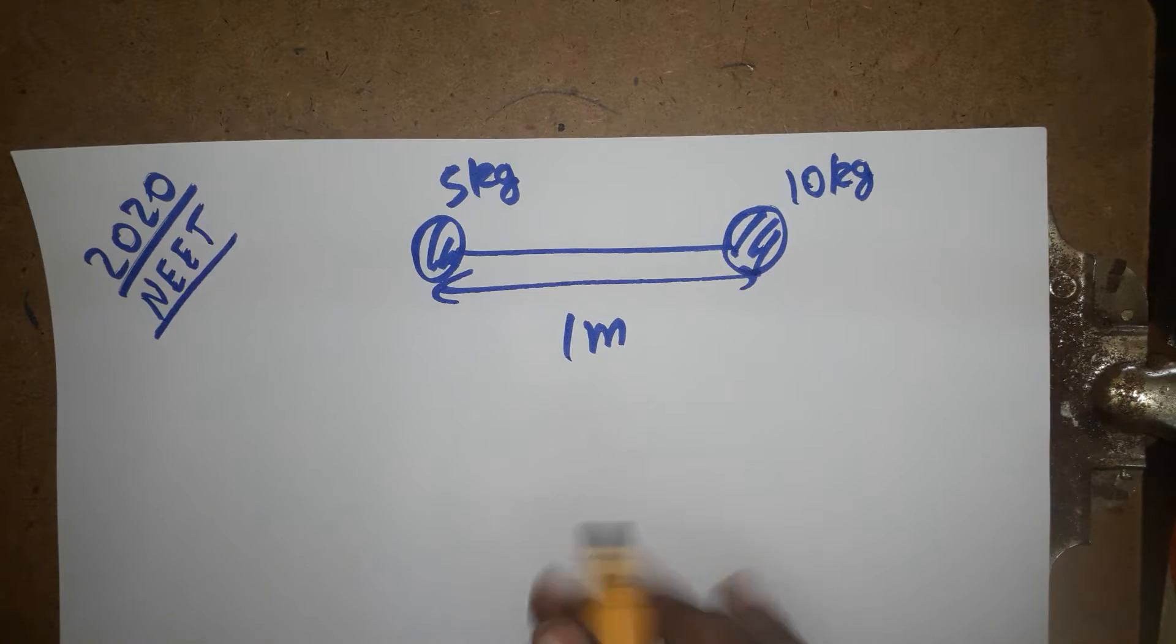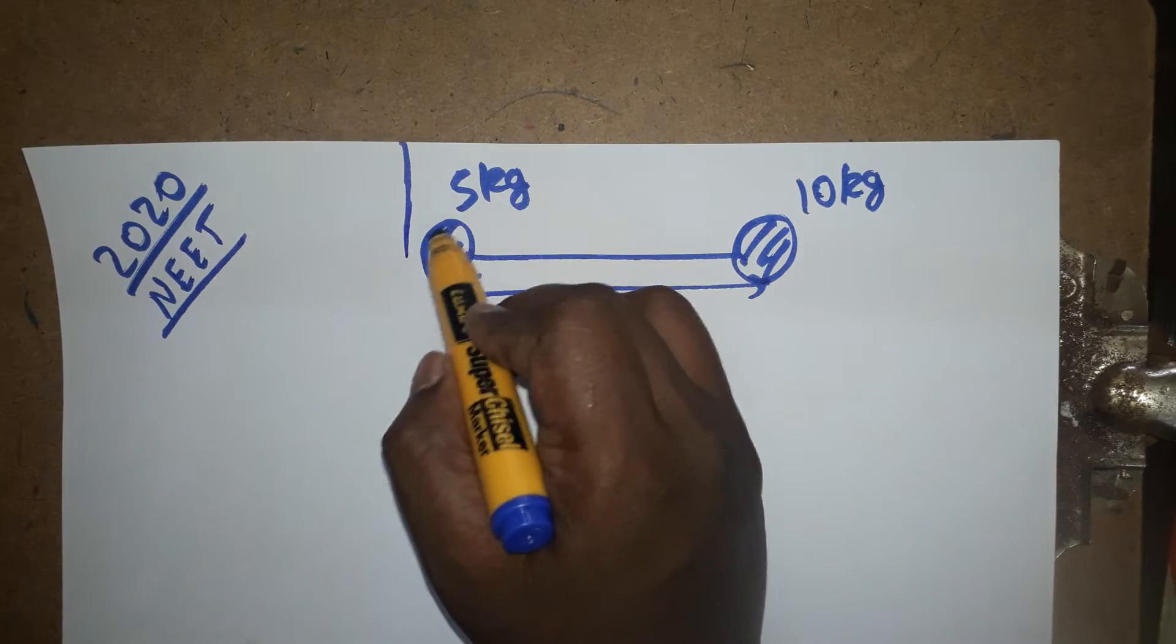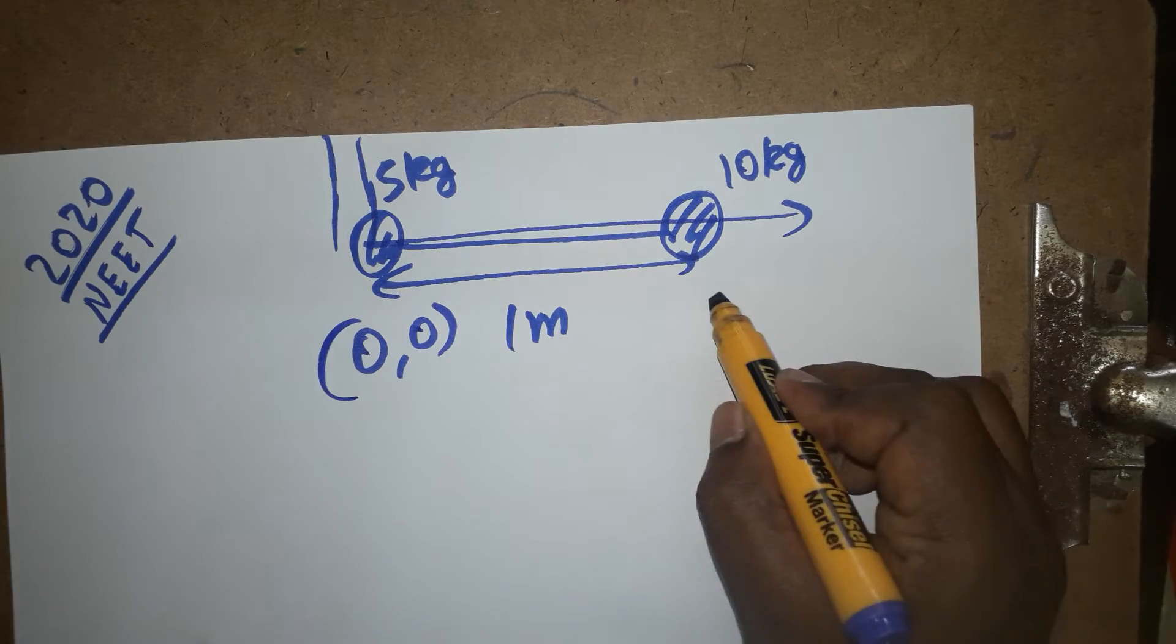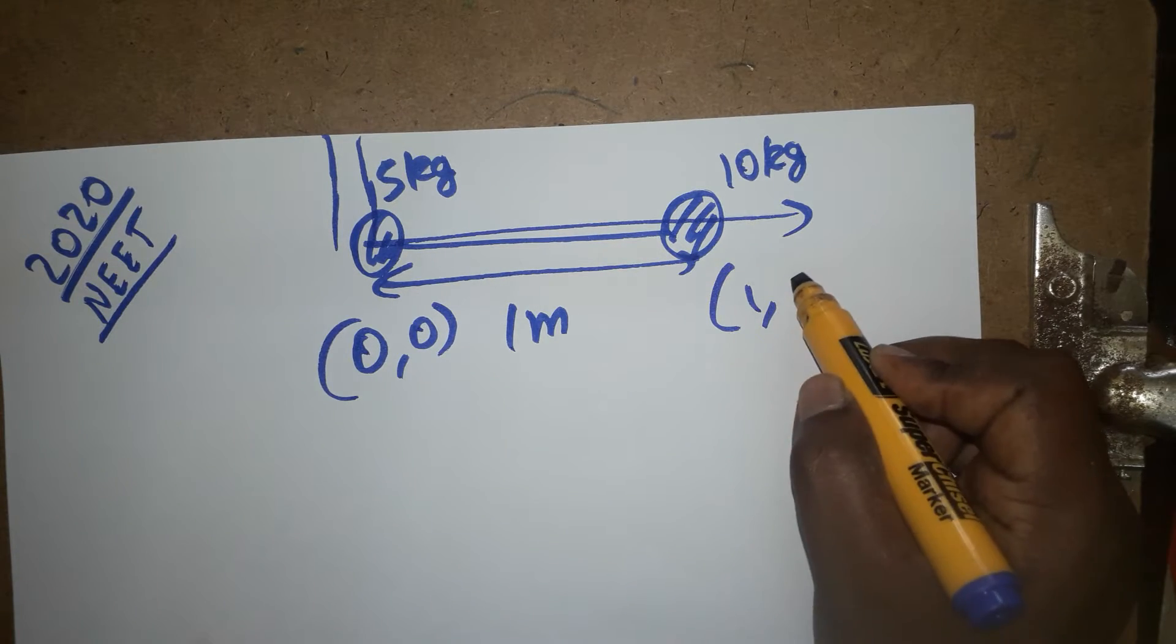Here no need to take it as a y-axis, only x-axis is there. If you are taken, this 5 kg is placed in origin, so 0, 0. And this going to be x-axis will be 1 meter, y-axis will be 0.